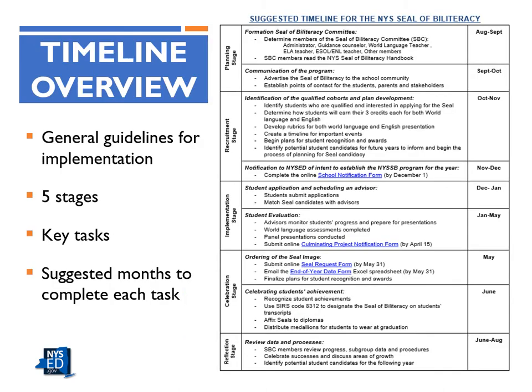Let's review the suggested timeline to implement the New York State Seal of Biliteracy program at the school level. Viewers can find this timeline document on the same website under Module 1. The timeline is provided as a general guideline and schools may adjust it to fit their own needs. It covers five stages: planning, recruitment, implementation, calibration, and reflection. Within each stage, key tasks are outlined, with months listed for each task based on OBEWL deadlines. Please stop the recording and take a few minutes to review the timeline and reflect on what this might look like at your school.